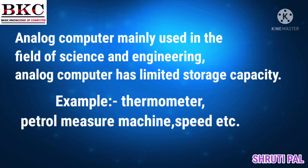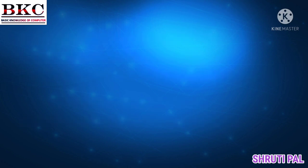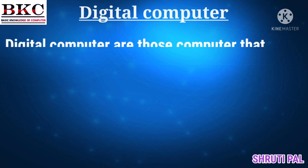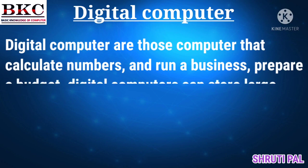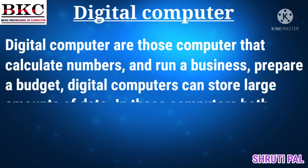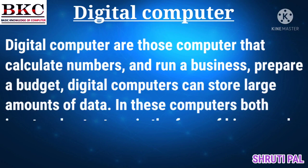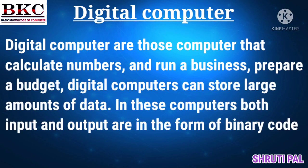Analog computer speed ko naap ke uski tivrata ko ankon mein convert karta hai, jaise speedometer. Digital — digit ka matlab hota hai koi bhi ank. Friends, digital computers wo hote hain jo zero or one ki form mein work karte hain.